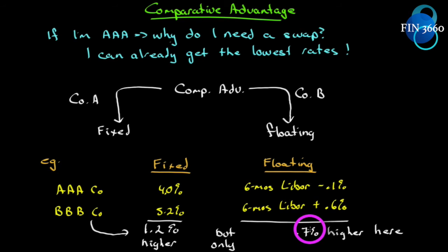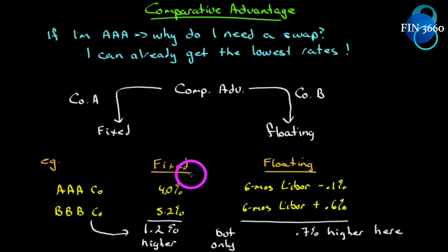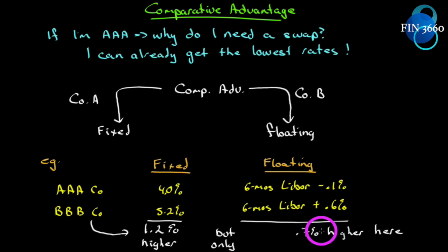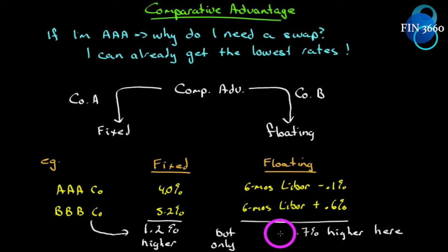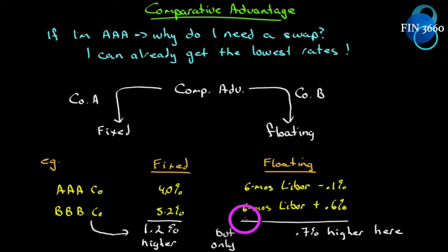The text suggests triple-B has an advantage in the floating rate market while triple-A has an advantage in the fixed rate market. But you'll get further thinking in terms of disadvantage: in the fixed rate market triple-B is 1.2% disadvantaged, in the floating rate market triple-B is only 0.7% disadvantaged. There are 50 basis points of difference between those disadvantages, creating an opportunity to lower everyone's aggregate borrowing costs.